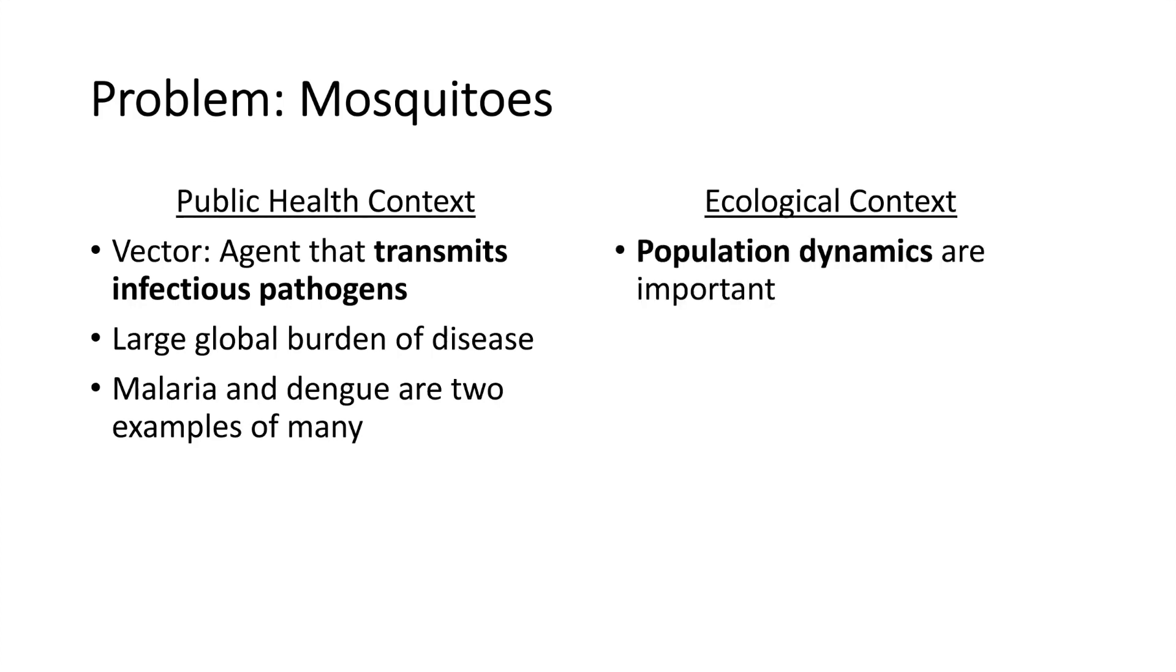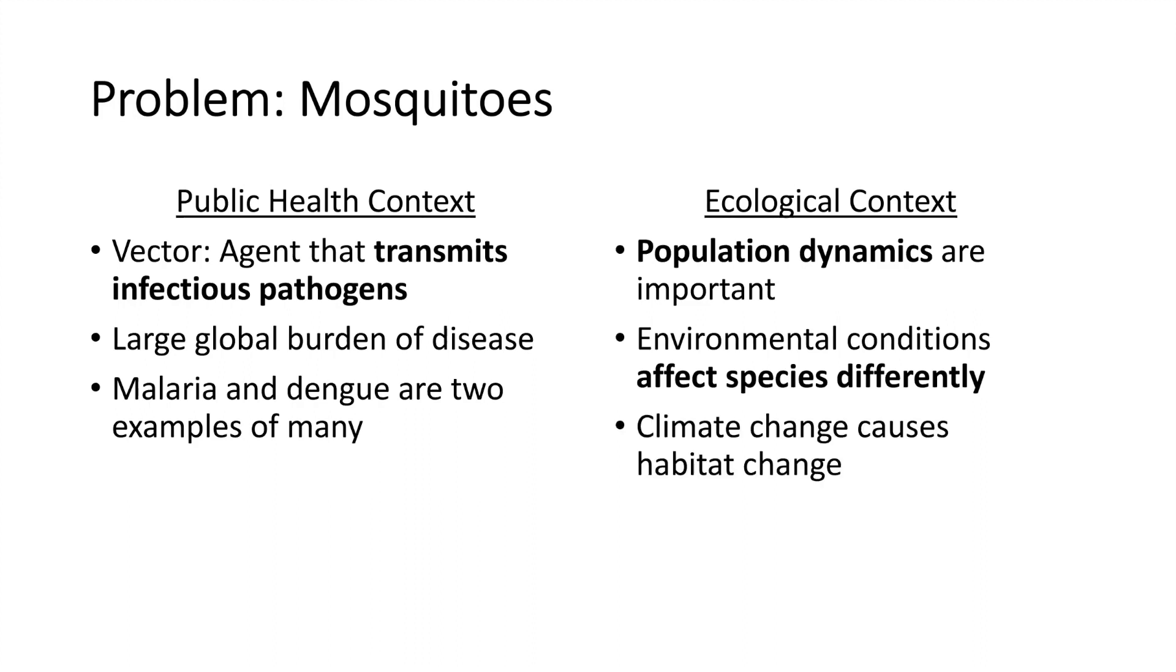An important part of targeting interventions effectively is improving our understanding of mosquito population dynamics. Different mosquito species thrive under different environmental conditions. This makes climate change an important concern, as it will affect average global surface temperatures and habitat availability. Species which did not previously thrive in some areas may now do very well. This range shift for the mosquitoes means a shift in risk for human health, thanks to the diseases that they carry.